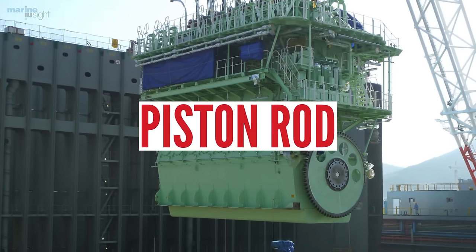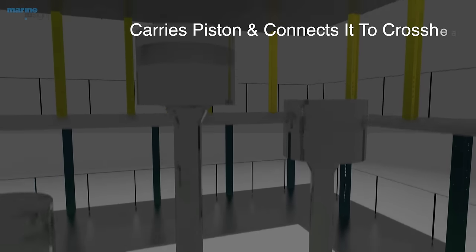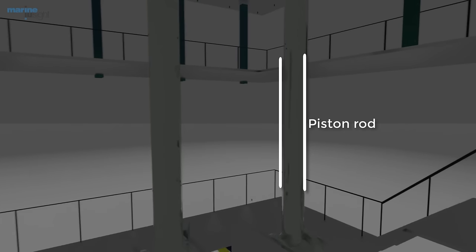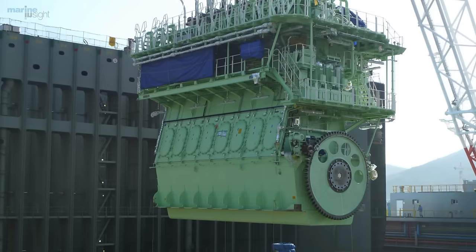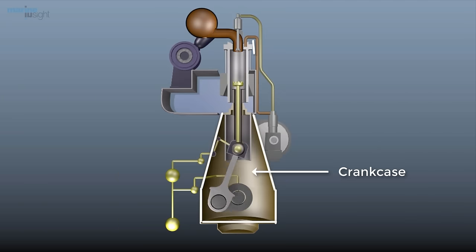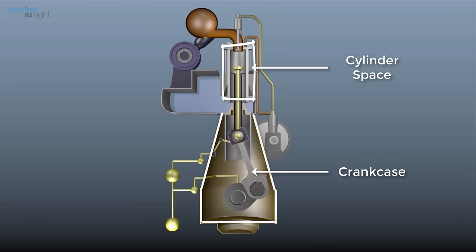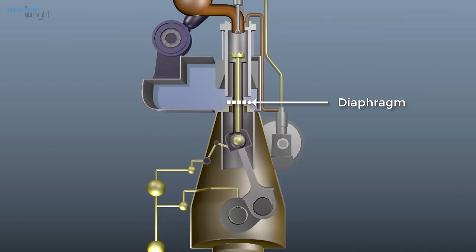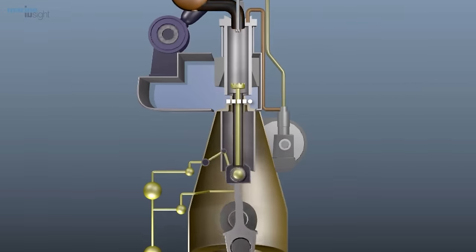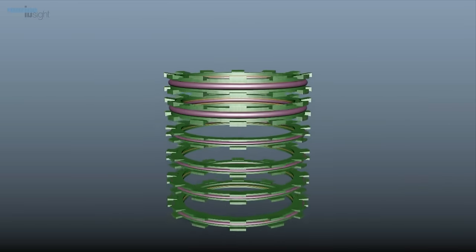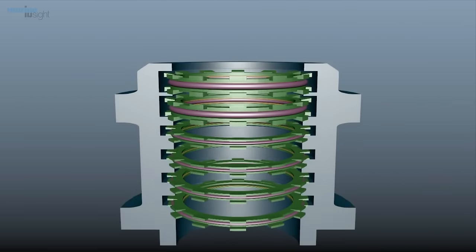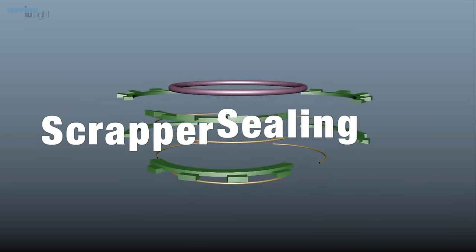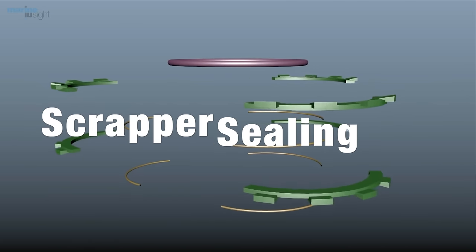Piston rod: It carries the piston and connects it to the crosshead where the motion transfer takes place. Stuffing box: The crankcase is separated from the cylinder and scavenge space by a diaphragm plate on a two-stroke crosshead engine. The piston rod passes through a stuffing box which is bolted into this diaphragm plate. The stuffing box contains a series of scraper rings and sealing rings to seal and separate these two spaces.